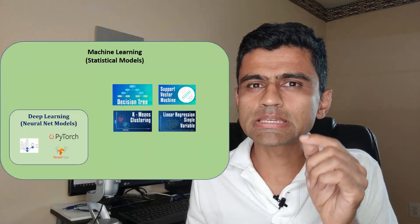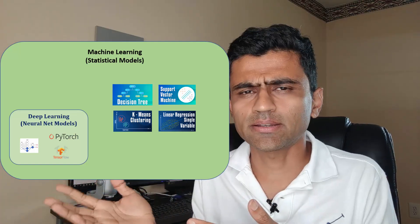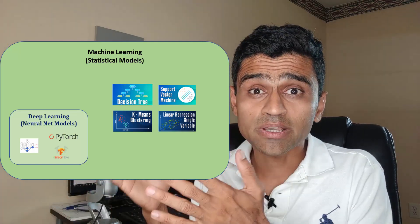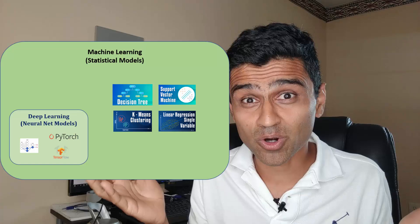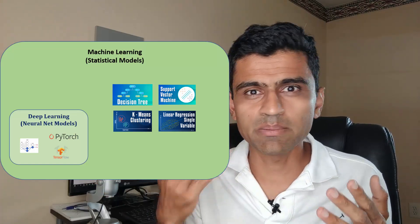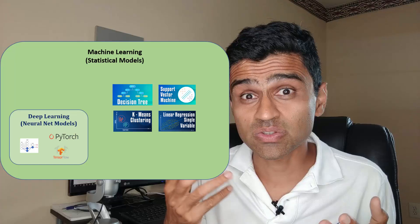Machine learning is deep learning plus something else. What is that? Well, that plus is basically statistical models such as SVM, decision tree, k-means, linear regression, and so on.